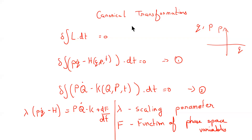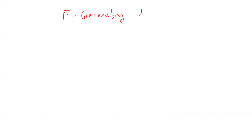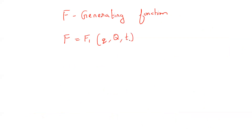This function F, from here on, I am going to call the generating function. This function F that generates the transformation is called the generating function. There are different generating functions and they generate different kinds of transformations. The first kind we will see is called F1, and it is a function of small q's, capital Q's, and t.